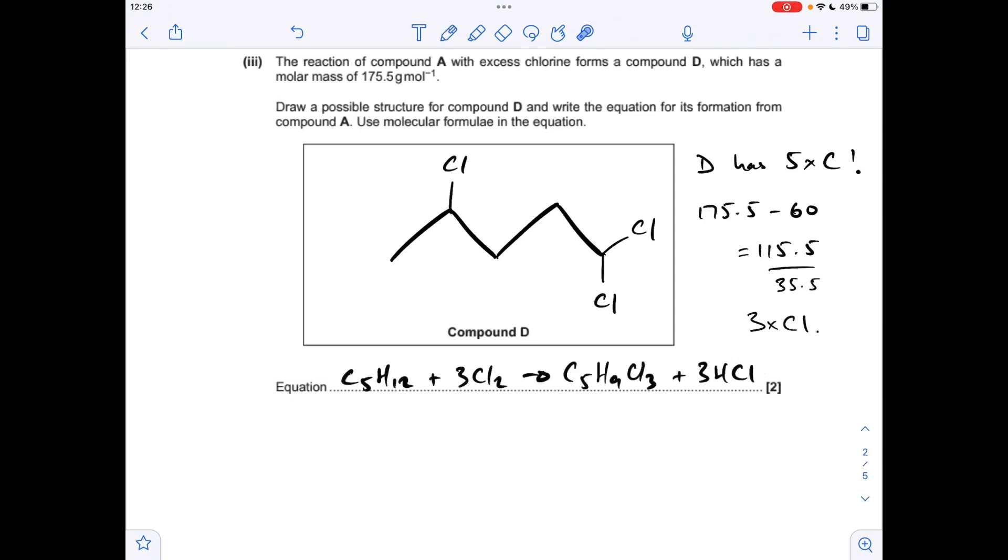So moving on to the equation, so there it is there, and the thing to remember about this equation or this reaction is for each substitution. So we've got three substitutions here, you need a mole of halogen, so we needed three moles of Cl2, and you make three moles of HCl, in this case, hydrogen halide. So for each substitution, you need a mole of halogen, and you make a mole of hydrogen halide.